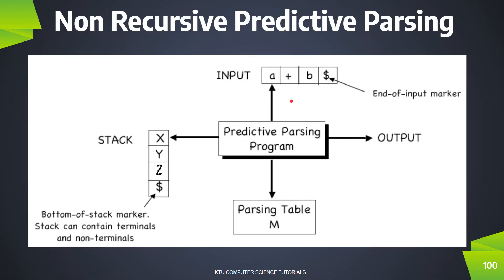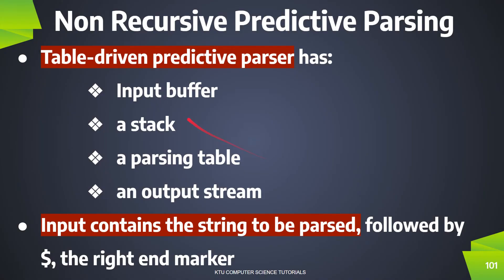Now let's design the non-recursive predictive parser. We have four components: first is the Input Buffer, second is the Stack, third is the Parsing Table, and fourth is the Output string.